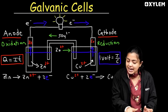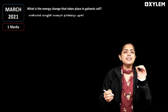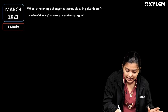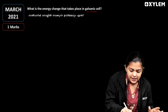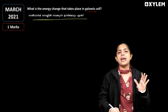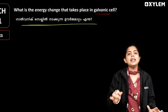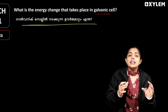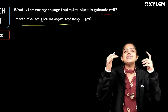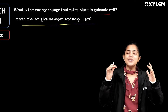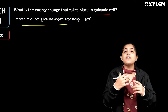First question: what is the energy change taking place at the Galvanic Cell? In a Galvanic Cell, we have a chemical reaction that creates electricity.